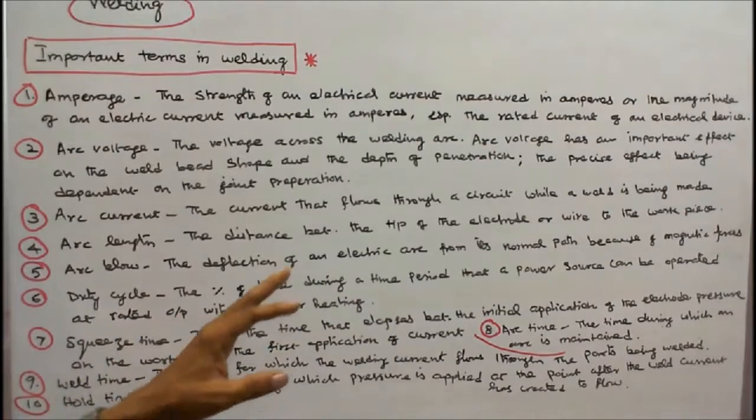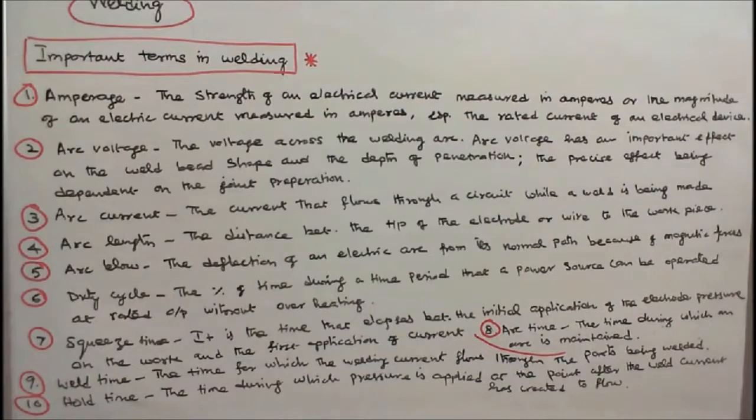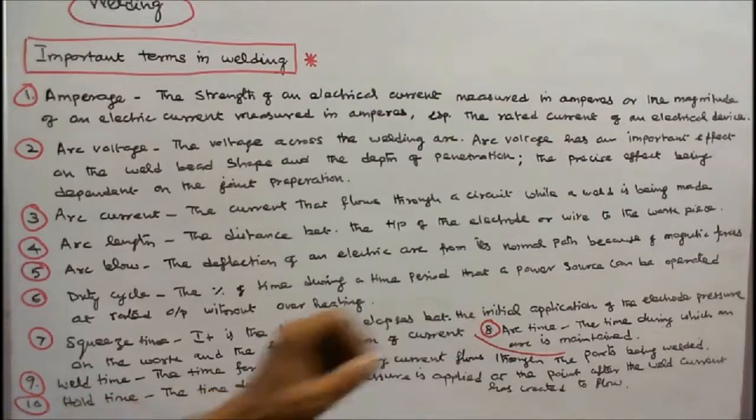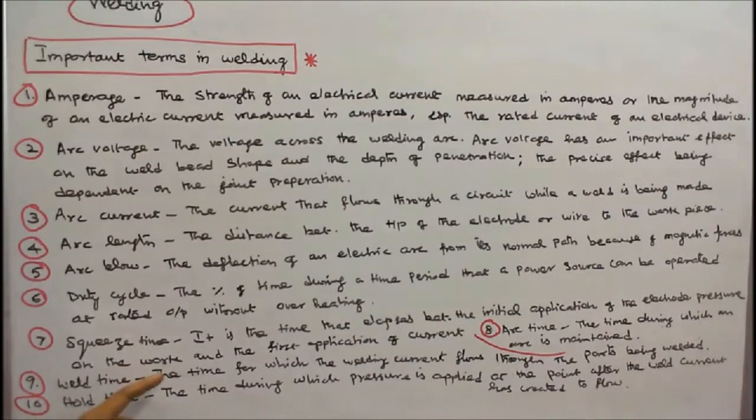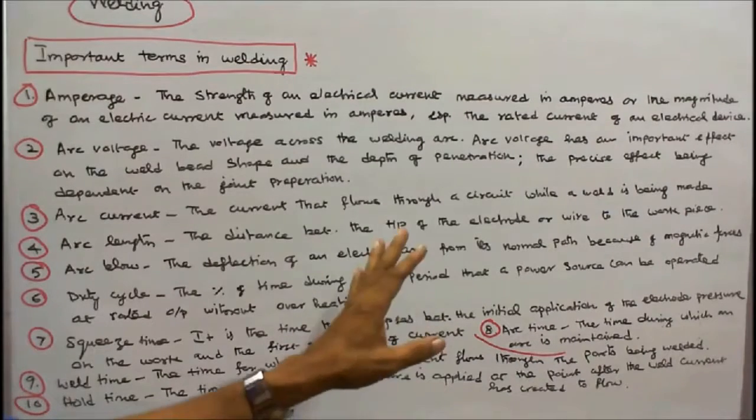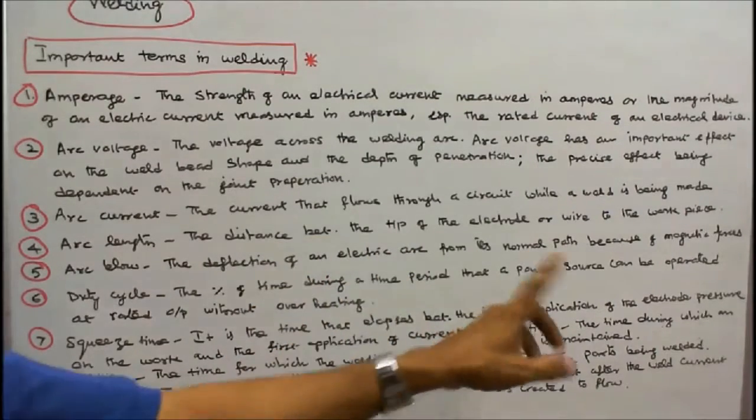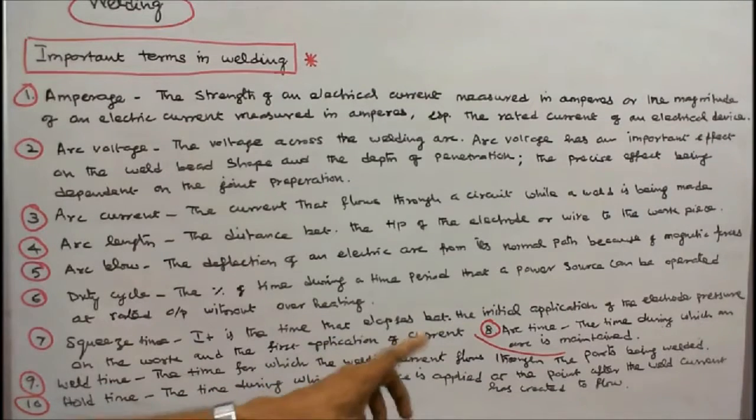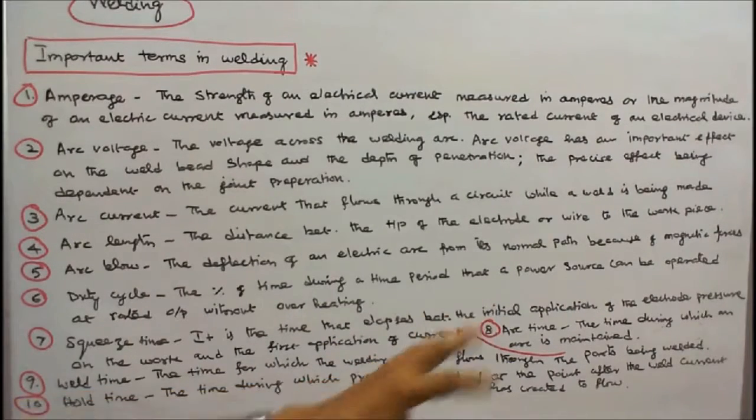Number seven, squeeze time: it is the time that elapses between the initial application of the electrode pressure on the work and the first application of current. Number eight, arc time: the time during which an arc is maintained. Number nine, weld time: the time for which the welding current flows through the parts being welded.